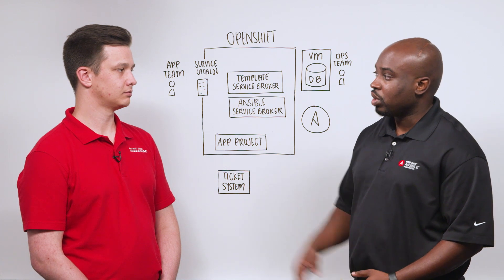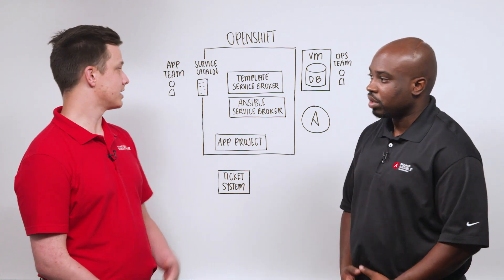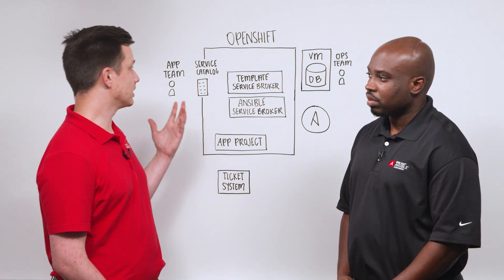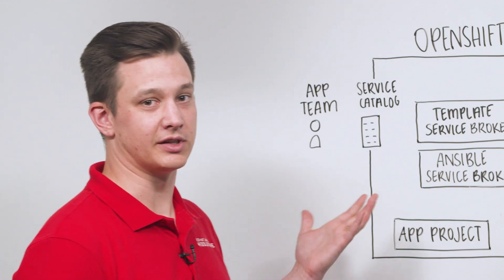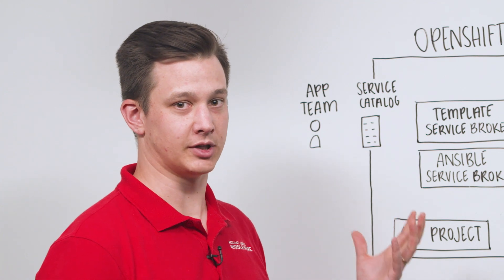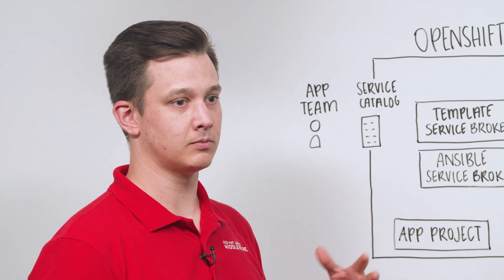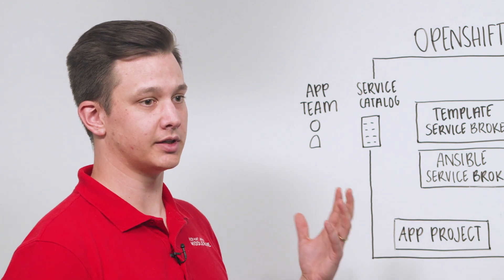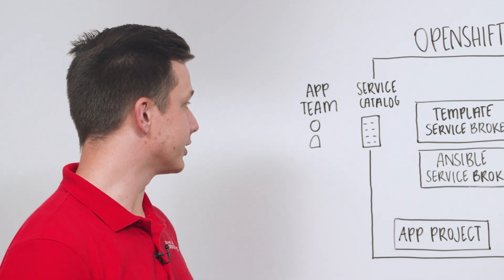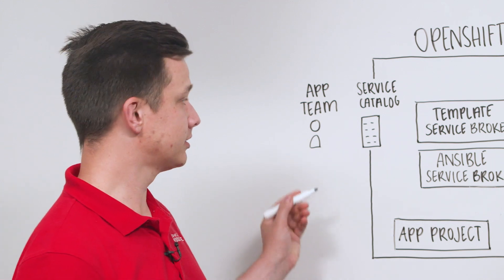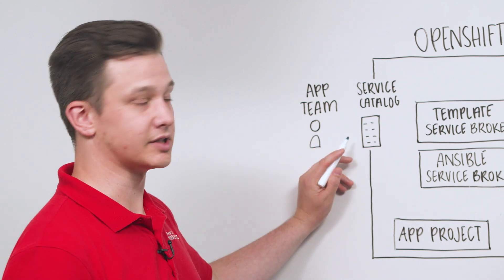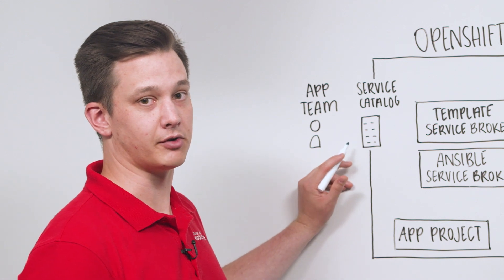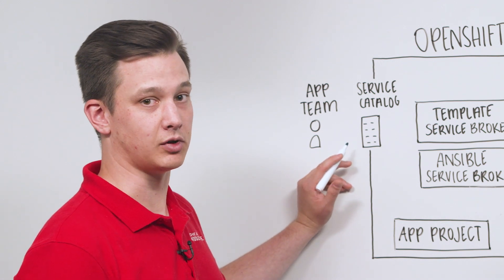What are you guys doing on the application side with OpenShift? On the app side, we're using OpenShift, which is a container orchestration engine. It allows app teams to work in a completely self-service manner, spinning up and spinning down apps, and doing whatever they need to get their business value delivered. The way app teams typically work with OpenShift is through the web console, and one of the components is the service catalog.